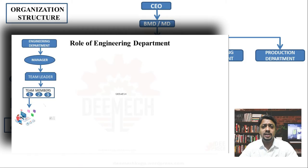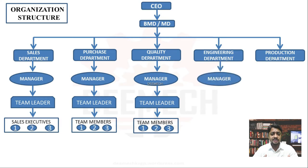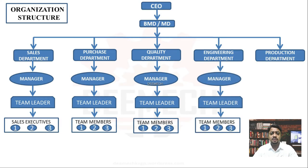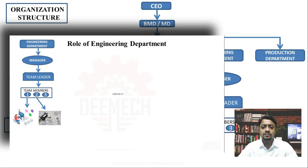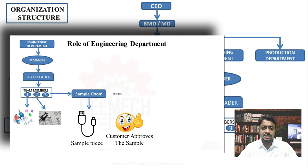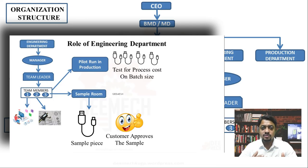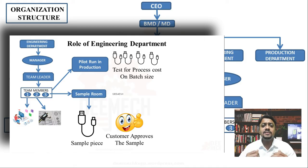Meanwhile, the engineering department works on design drawings, processes, etc. The manager manages the team, the engineering team leader who is the expert leads the team, and various engineers work on the project. The engineering team makes an initial sample of the product and sends it to the customer. Once the customer is satisfied, a pilot operation is run — a test before the actual mass production — where time, process, men, money, and material required to complete the product are studied.